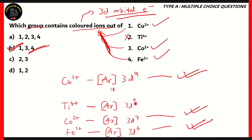Ti4+ is not a colored ion because there is no electron in the 3d orbital after forming the ion. So therefore, option B — 1, 3, 4 — is the right option. Any option with 2 is incorrect, and that includes options A, C, and D, which is why option B is the right option.